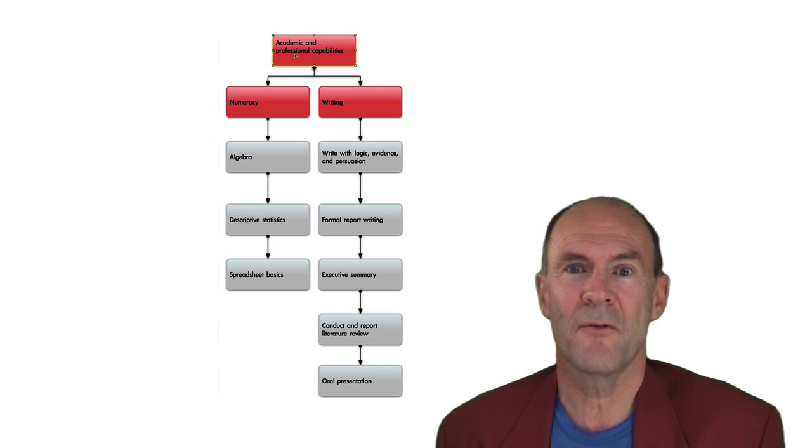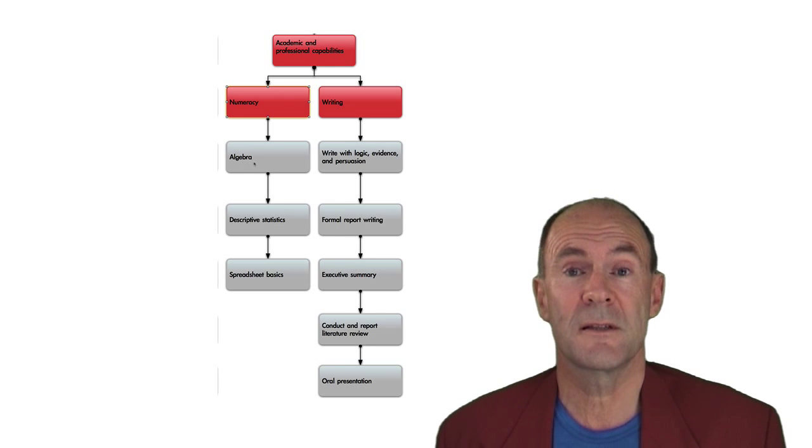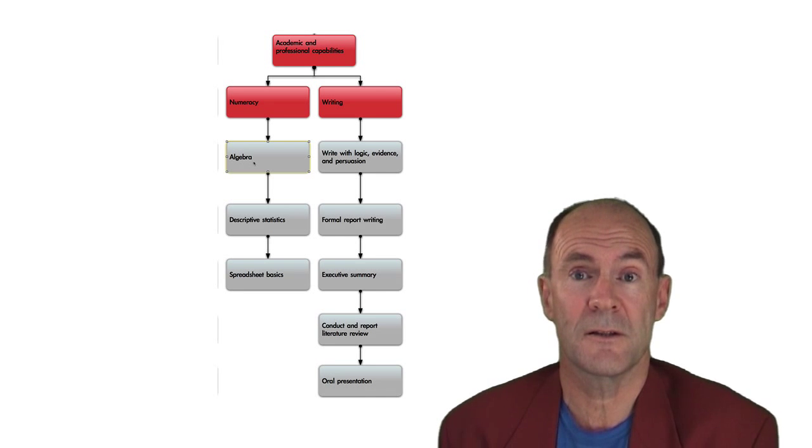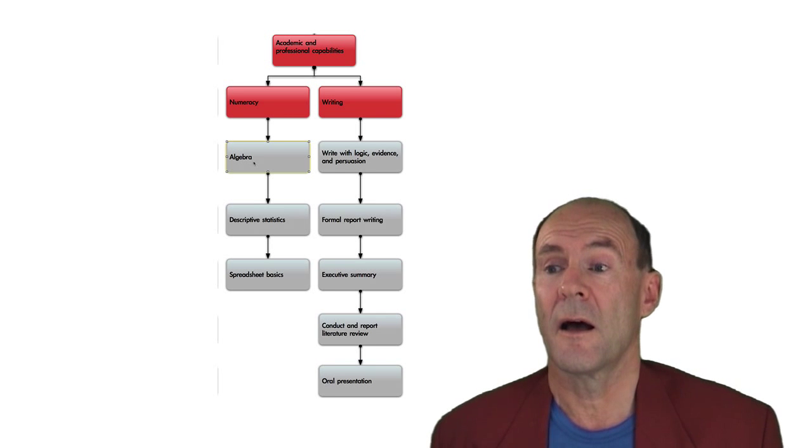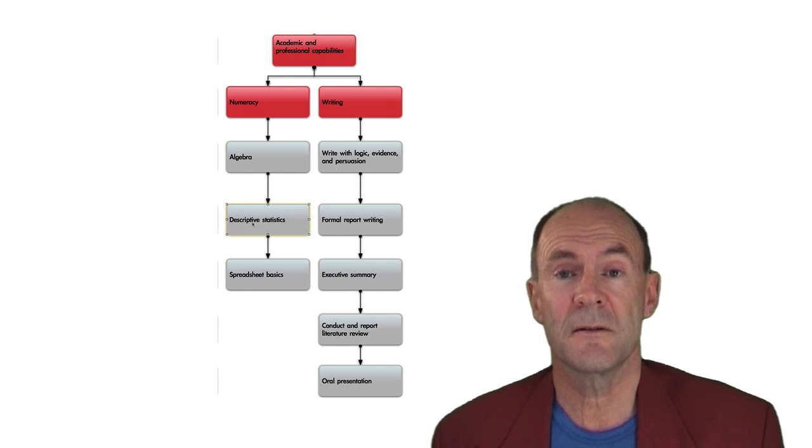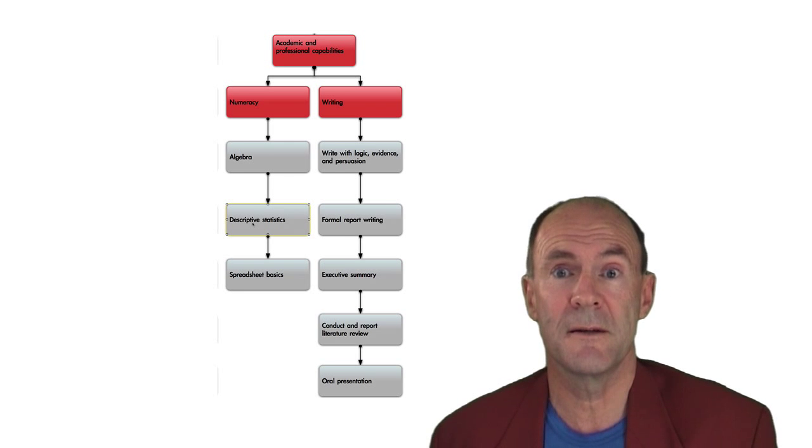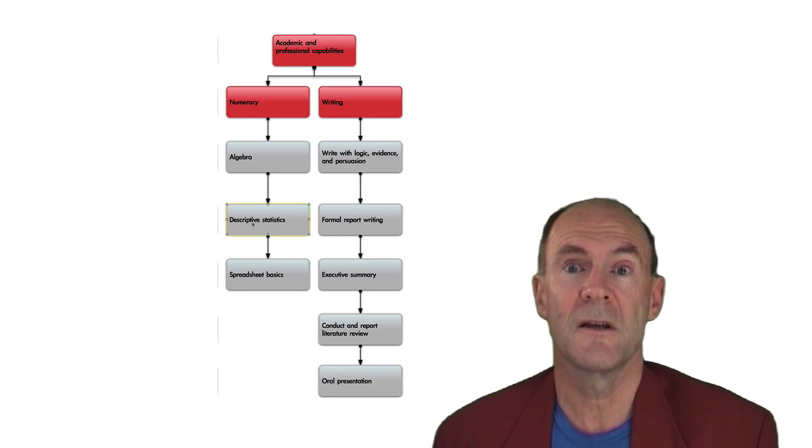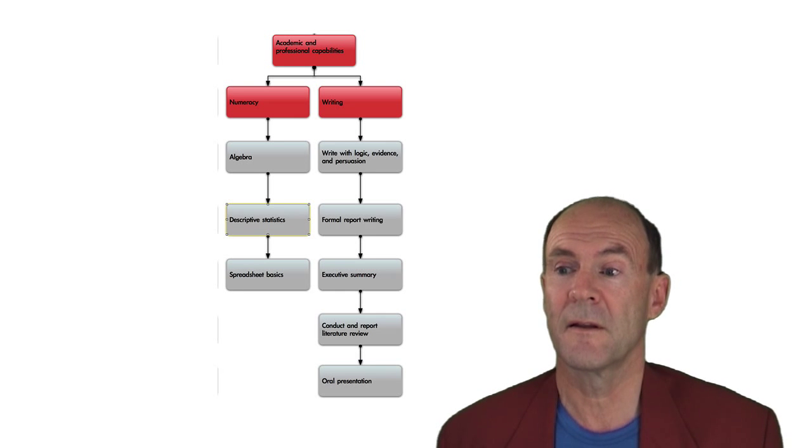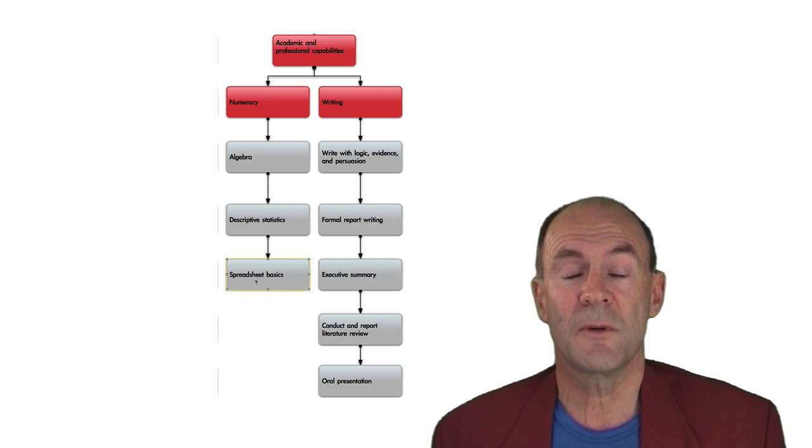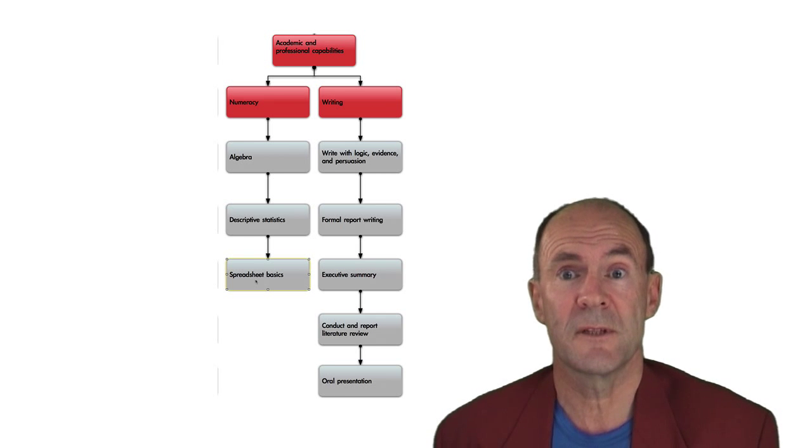BSNS 6350 assumes a certain level of numeracy skills. These skills include basic high school algebra and mathematics. Descriptive statistics. Descriptive statistics, particularly the ability to calculate means and standard deviations. To conduct basic linear modeling, linear forecasting models based on statistical data. Finally, you should be familiar with how to use spreadsheets and create simple spreadsheets.